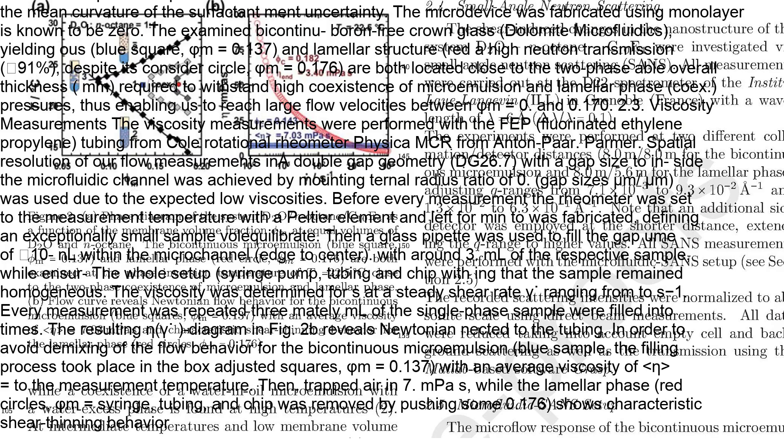The phase diagram of the D2O, N-octane, C10E4 system is shown as a function of the membrane volume fraction. The bicontinuous microemulsion and lamellar phase are examined at the phase inversion temperature close to the two-phase coexistence of microemulsion and lamellar phase. The flow curve reveals Newtonian flow behavior for the bicontinuous microemulsion and characteristic shear thinning behavior for the lamellar phase.